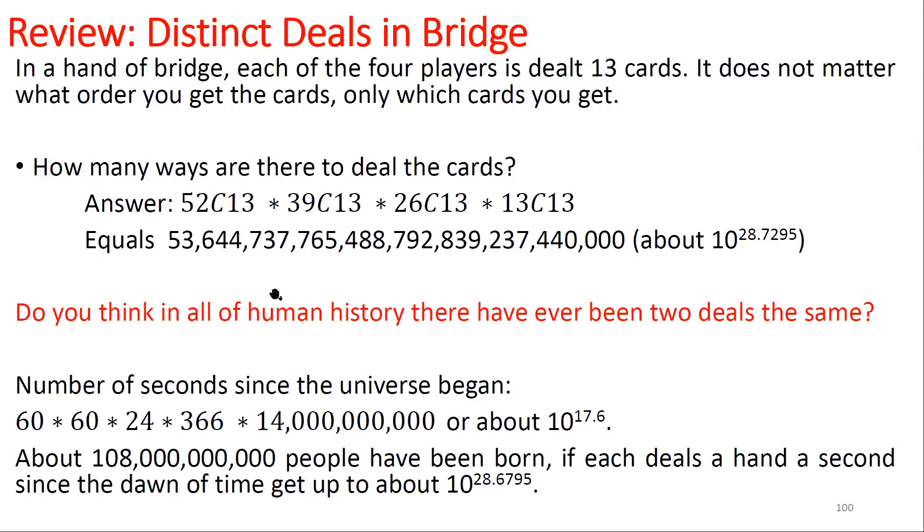In terms of what it equals, it's about 10 to the 28 or 10 to the 29. We did a calculation: if we imagined everyone who has ever lived was born at the start of the universe, and each of them dealt a hand of bridge every second since time began, that would not be quite large enough to go through all possible hands. We'd be close, but wouldn't quite reach all the examples.